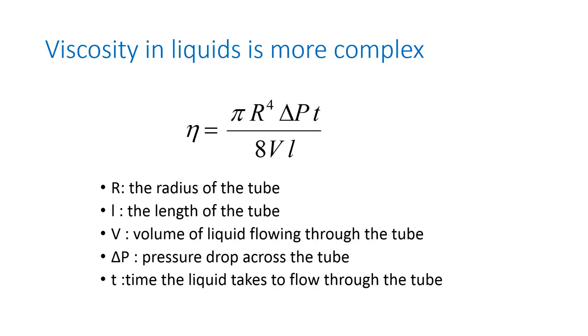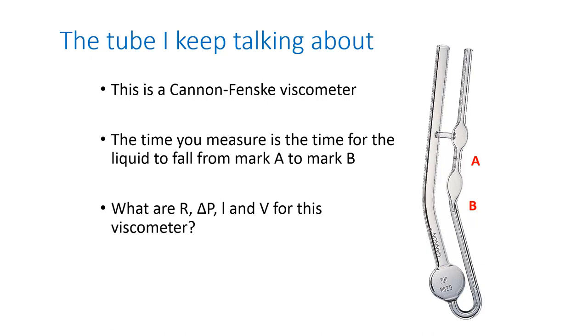So we need to know all these things if we want to calculate the viscosity from the time the liquid takes to move through a viscometer. Now a viscometer is a piece of glassware that looks like this. This specific kind is a Cannon-Fenske viscometer. There are many viscometers with different geometries, but this is the one that we're going to use in CHEM 311L.